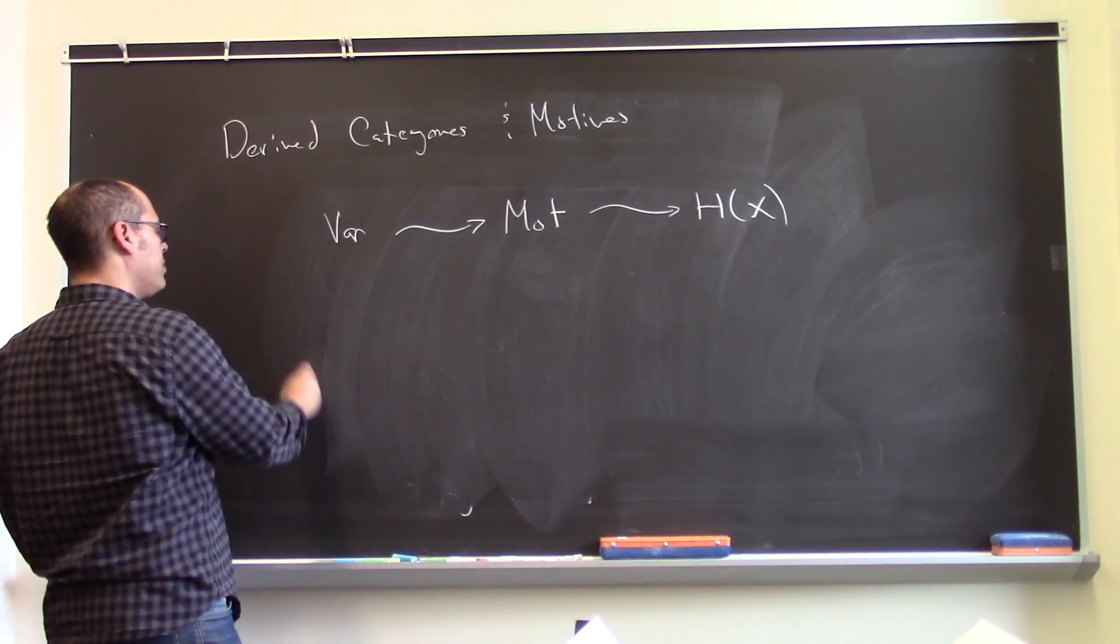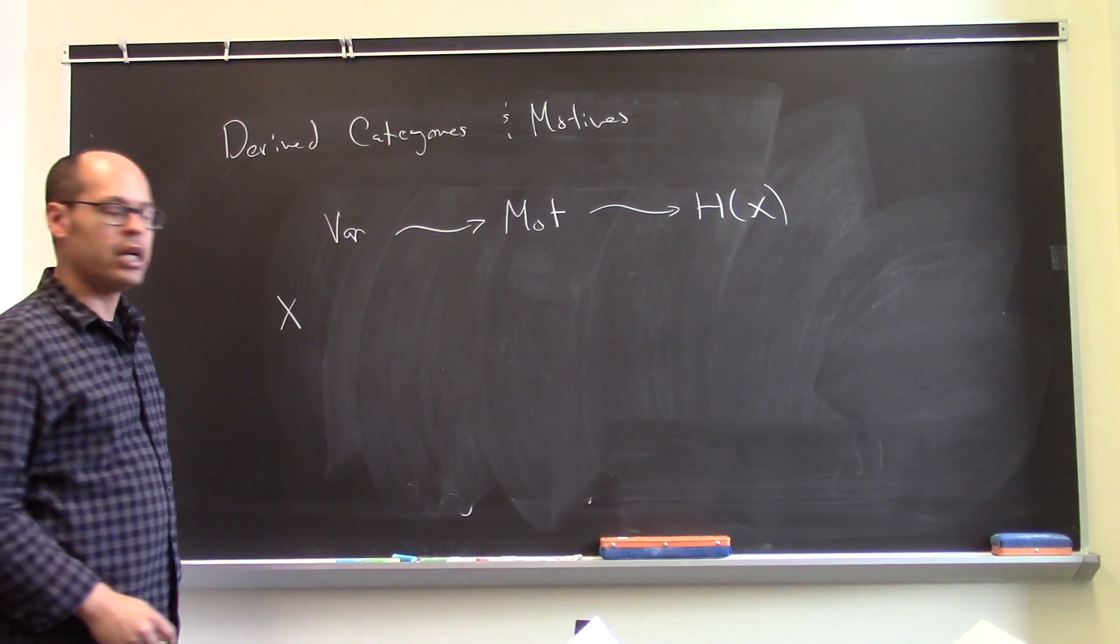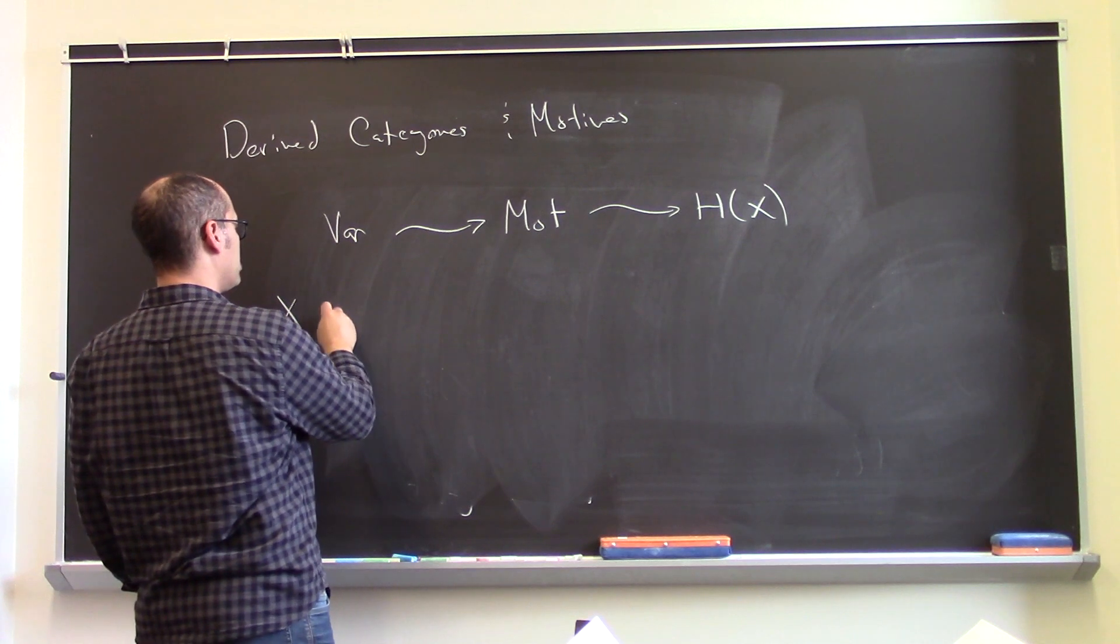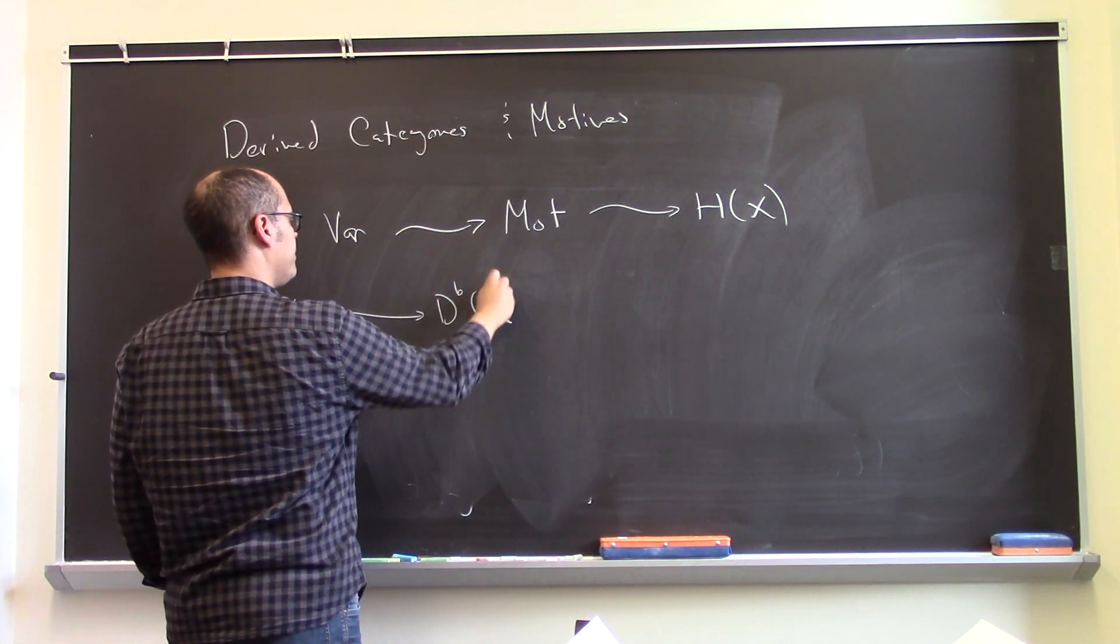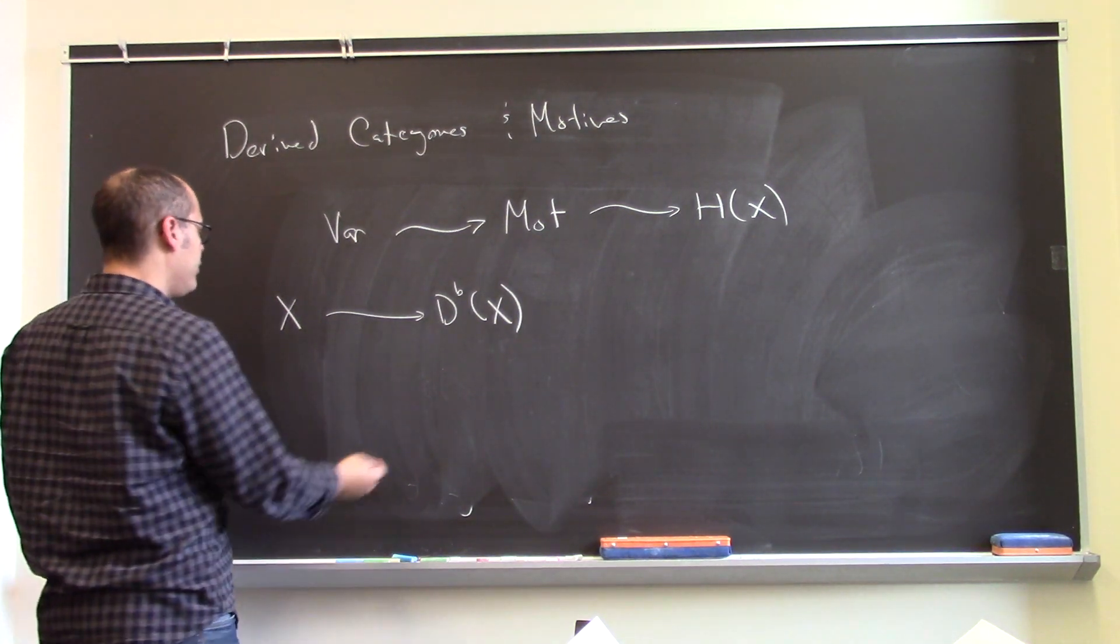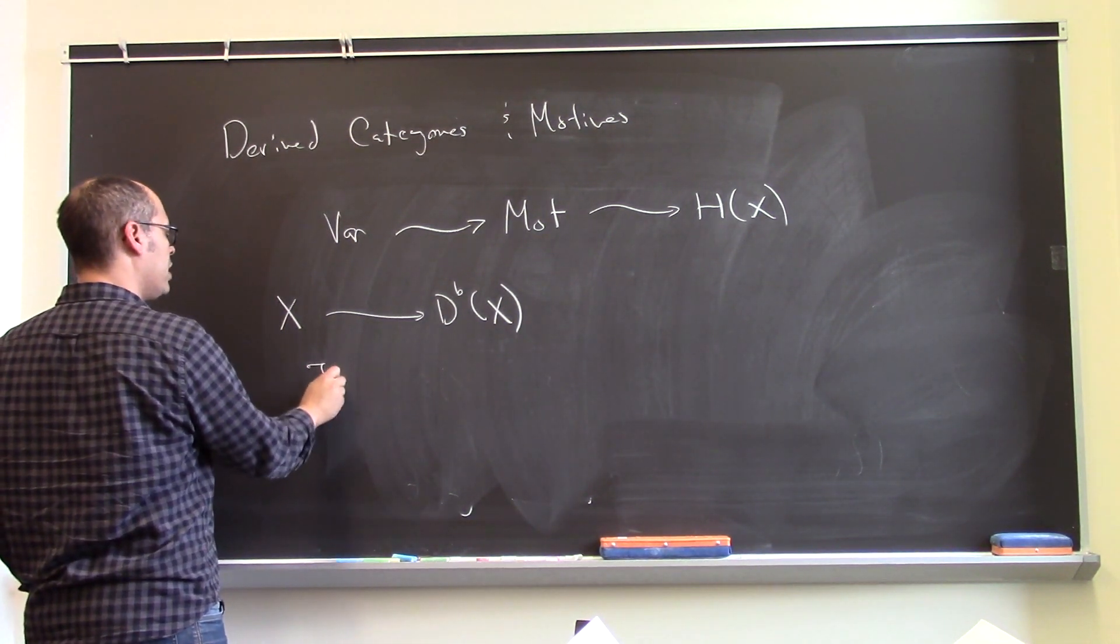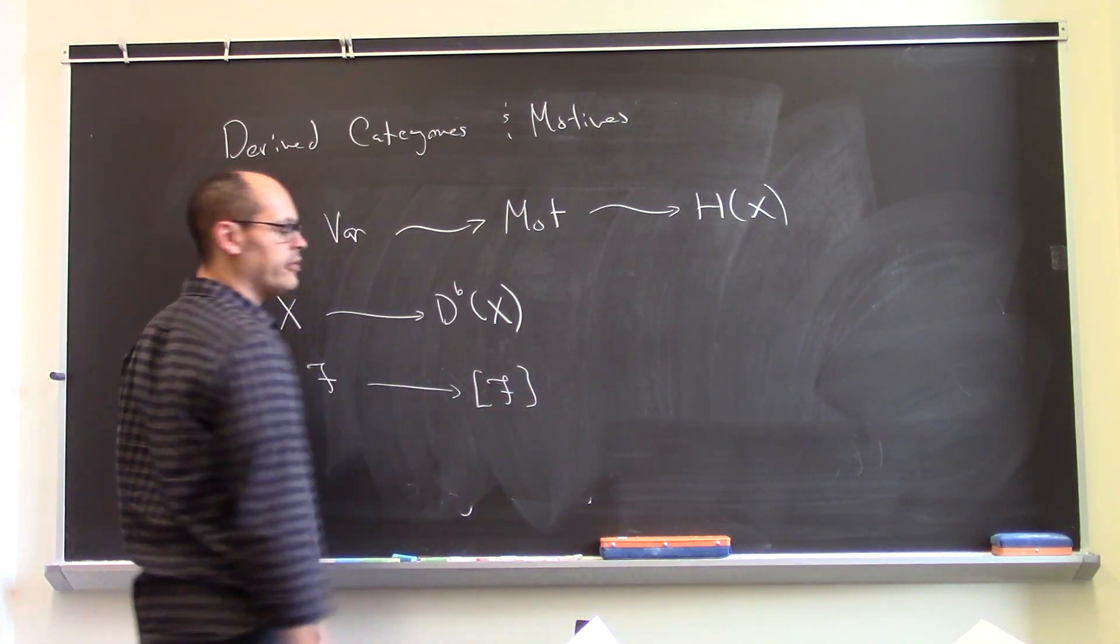Similarly, if somebody gives you a variety X, you can construct its derived category. And if you are given a sheaf on X, you can consider the corresponding object in the derived category.